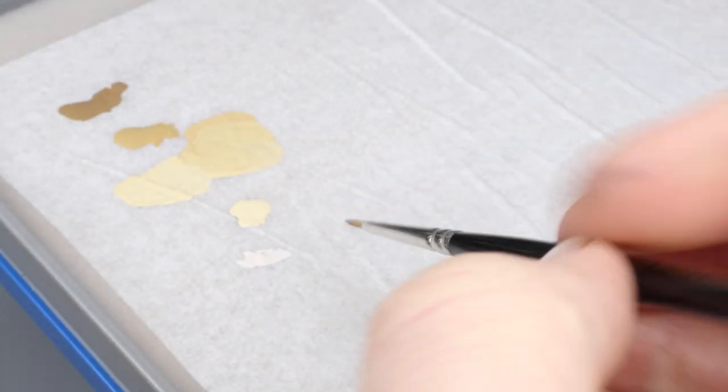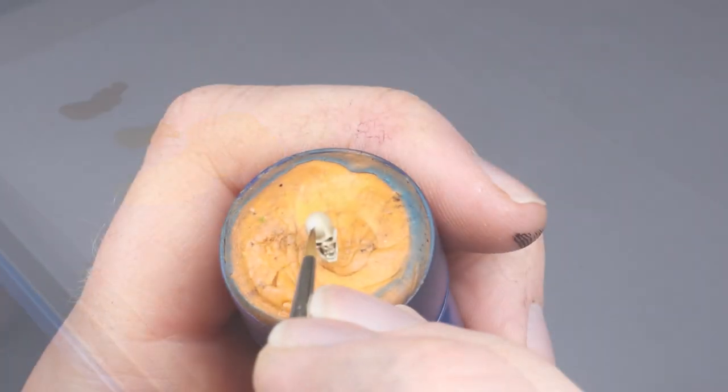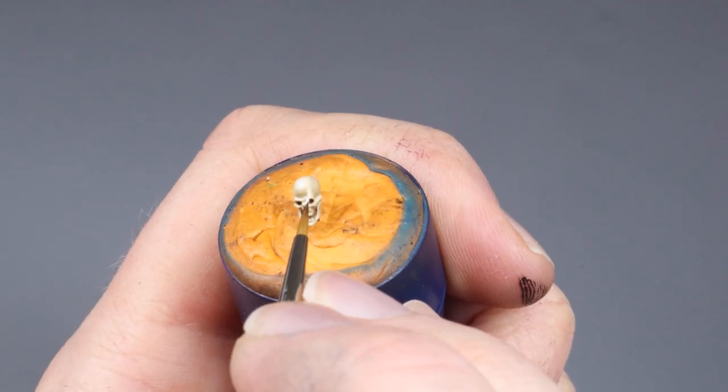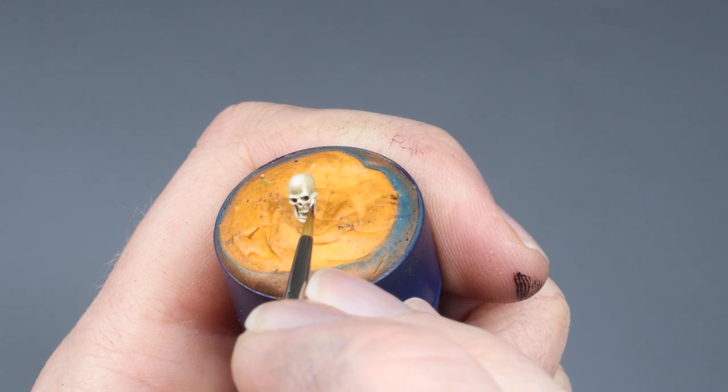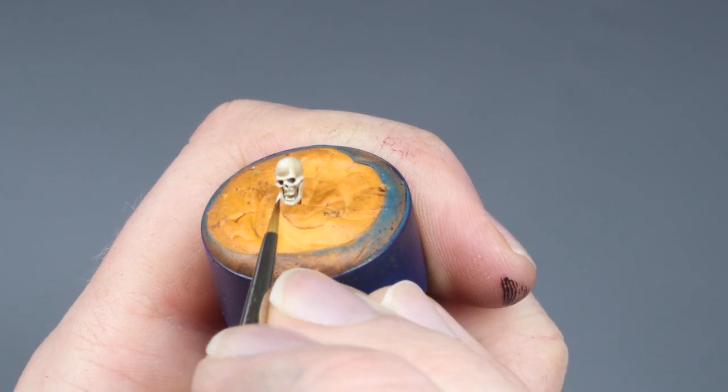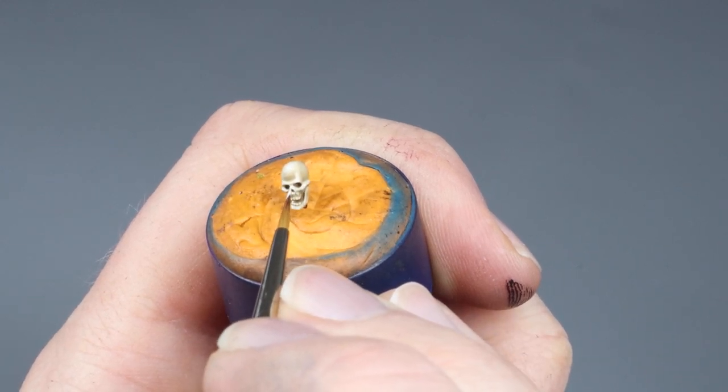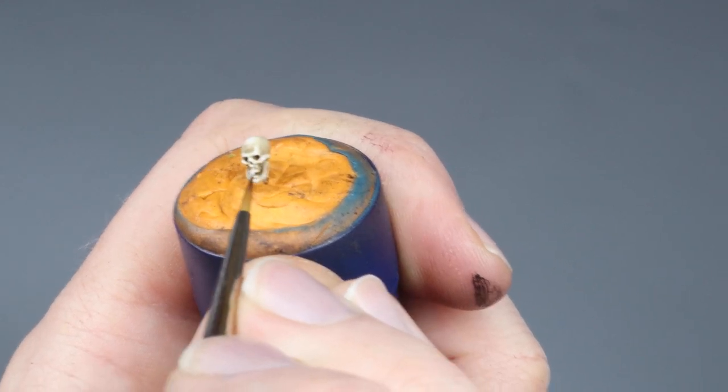Within one of the last steps here, I take some pure Pallid Witch Flesh for some reflections and final touches. I apply this in places such as the top of the cranium, eyebrow line, top of the nose and the bottom of the jaw. I also hit those teeth.